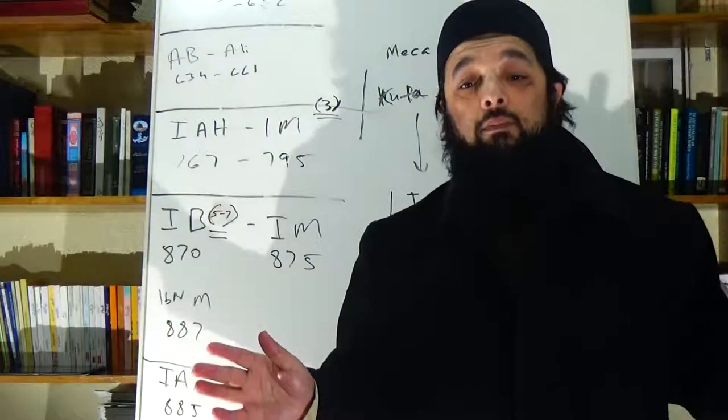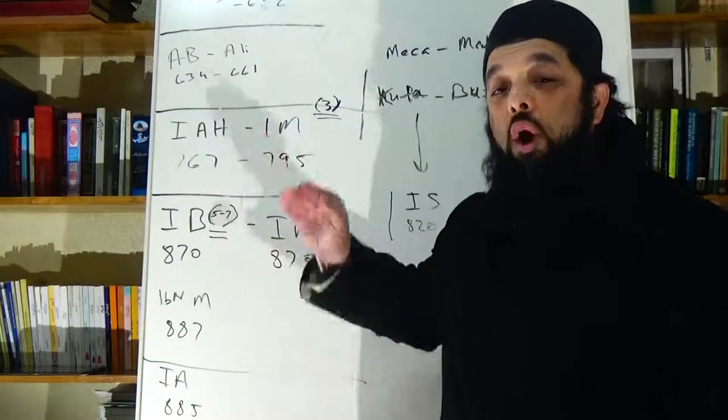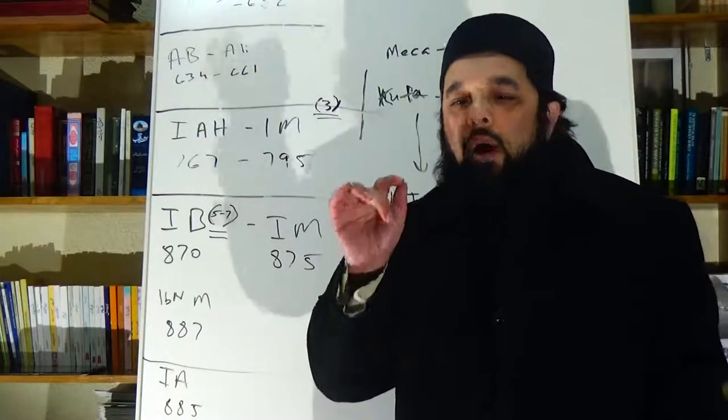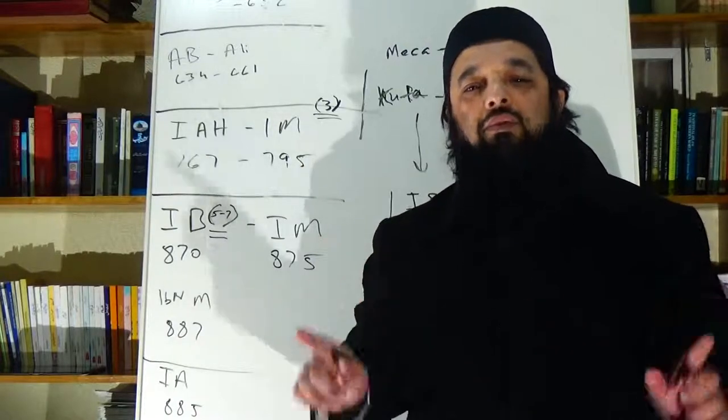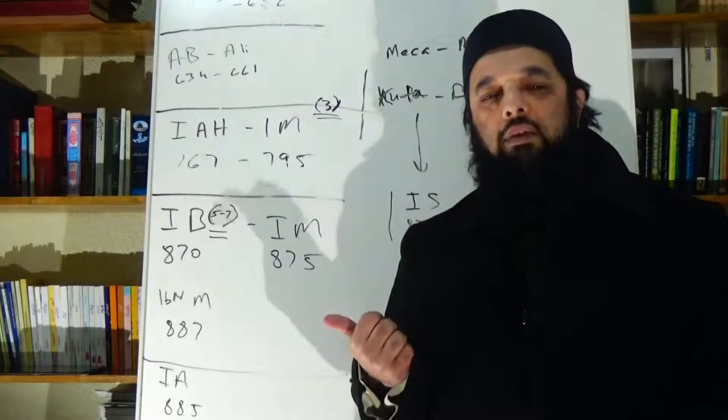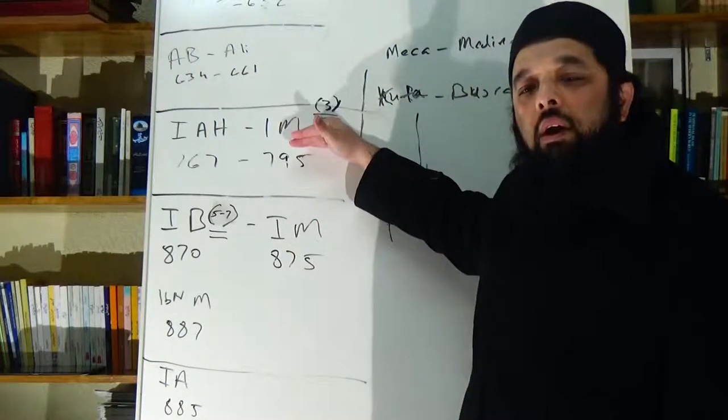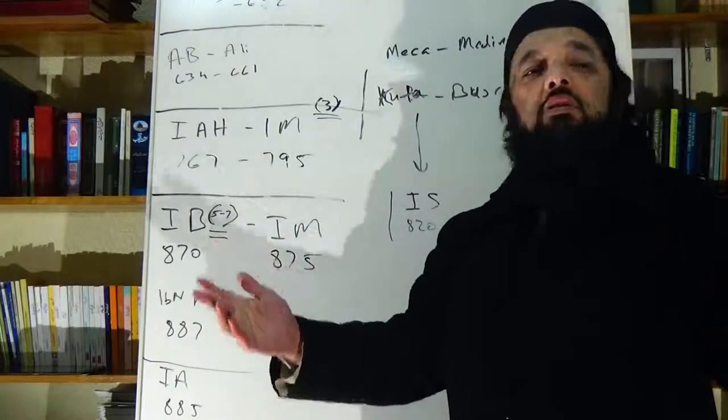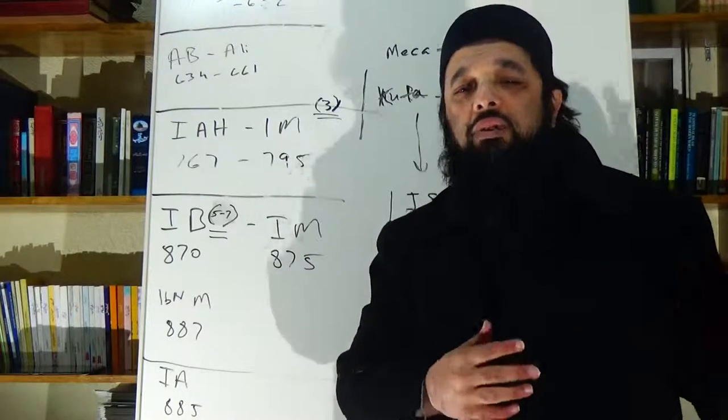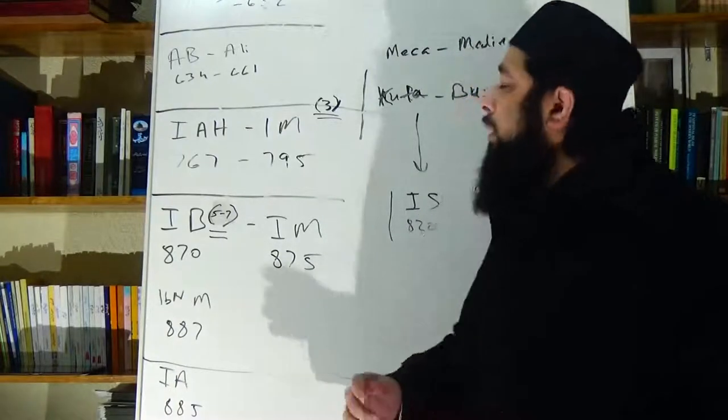So here it is, Imam Malik's opinion was, it's called Amal al-Medina, his opinion was, the children of the Medina is more heavy in weight and opinion than a single narration of a hadith, even if it's authentic, and there are many examples of this in the Maliki school. And you'll find many examples of the same situation in the Hanafi school, even though Imam Abu Hanifa did not make this a rule.